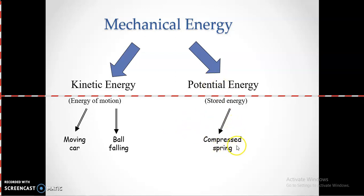An example of potential energy would be a compressed spring, or a stretched spring for that matter, the car at the top of the hill, or a car two-thirds of the way down the hill. Because when it's two-thirds of the way down the hill, it's still one-third of the way to go. So it still has potential.